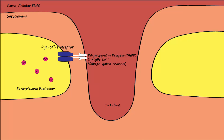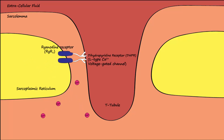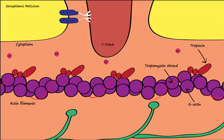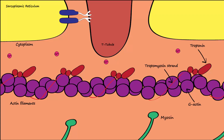The ryanodyne subtype RYR1 is located in skeletal muscles. Action potentials traveling down the sarcolemma lead to the opening of these channels. Once opened, calcium floods into the cytosol of the cell. The calcium ions then diffuse through the cytoplasm toward the actin filaments, which are composed of G-actin monomers. Troponin proteins are attached to the tropomyosin, which is a strand that covers the G-actin active sites, preventing crossbridge formation and preventing interaction of myosin and actin.